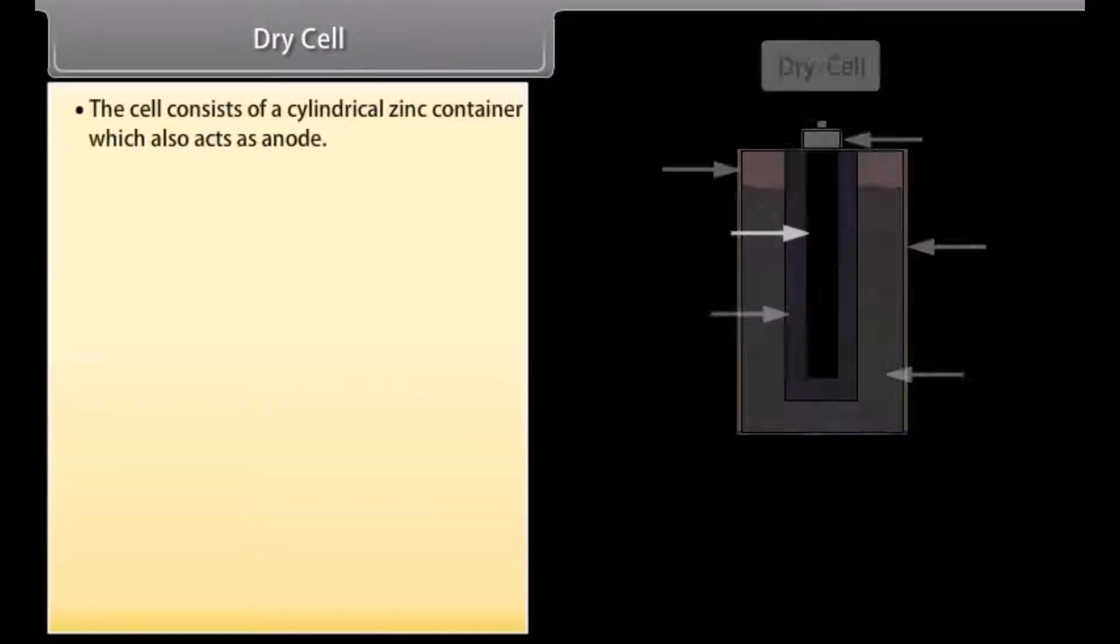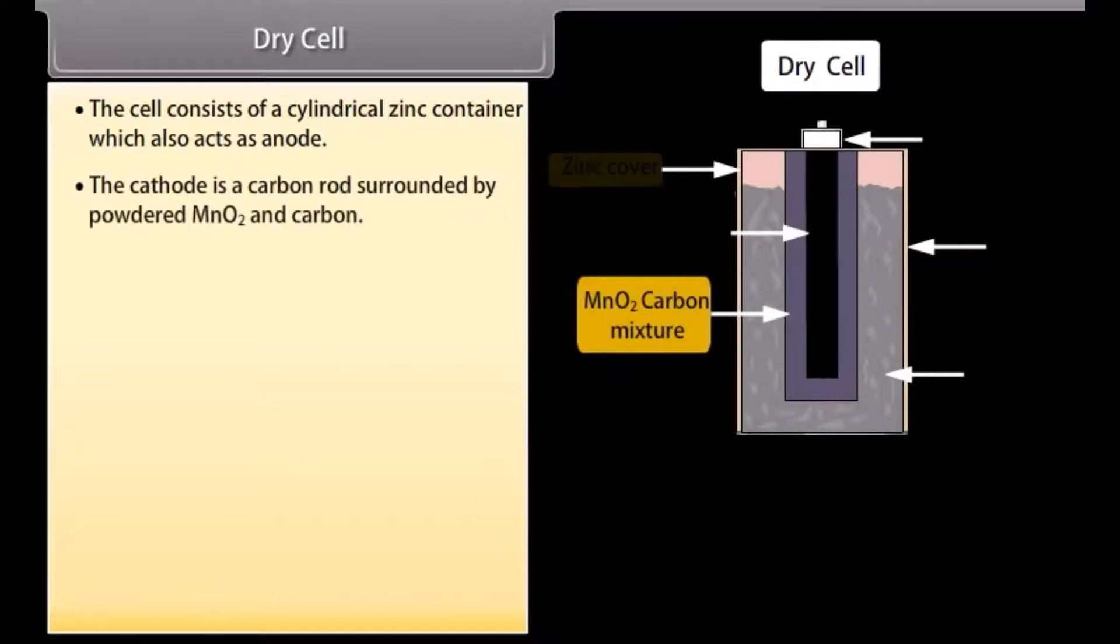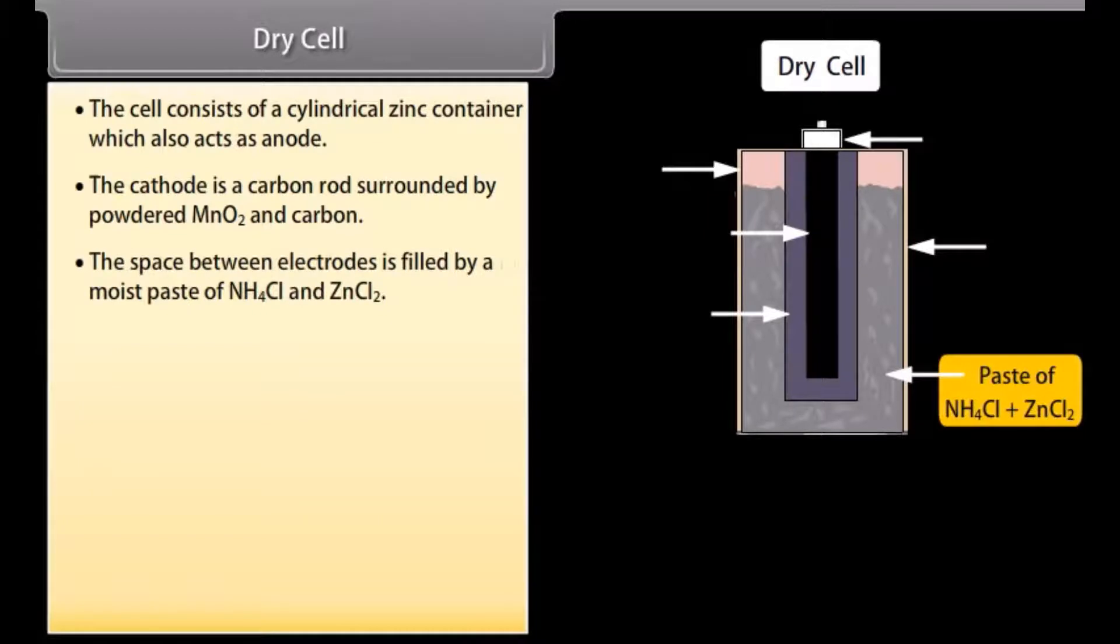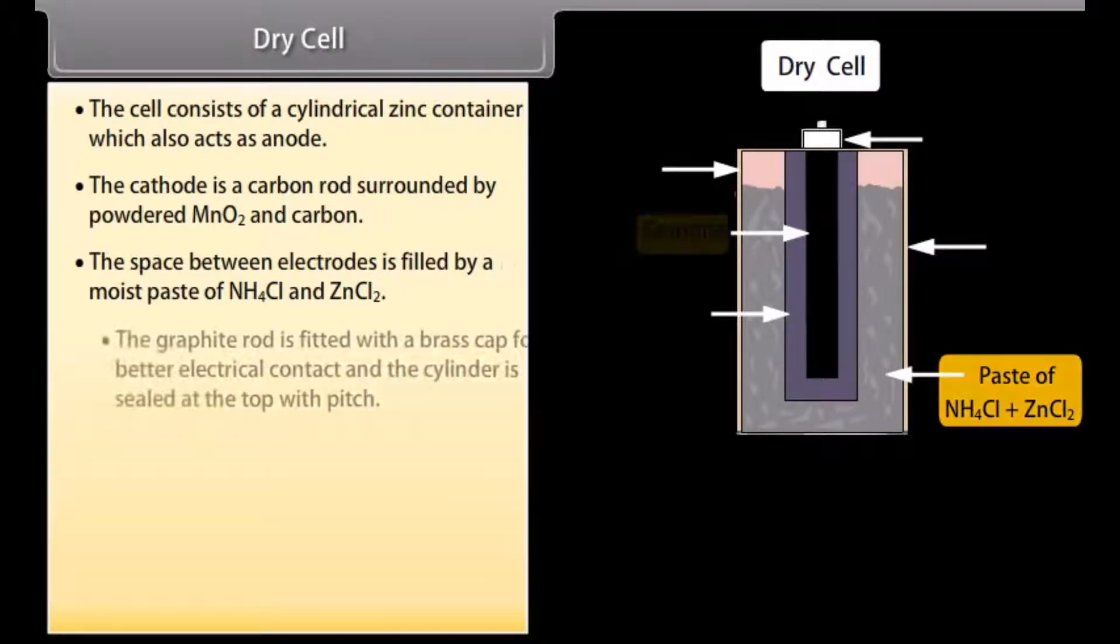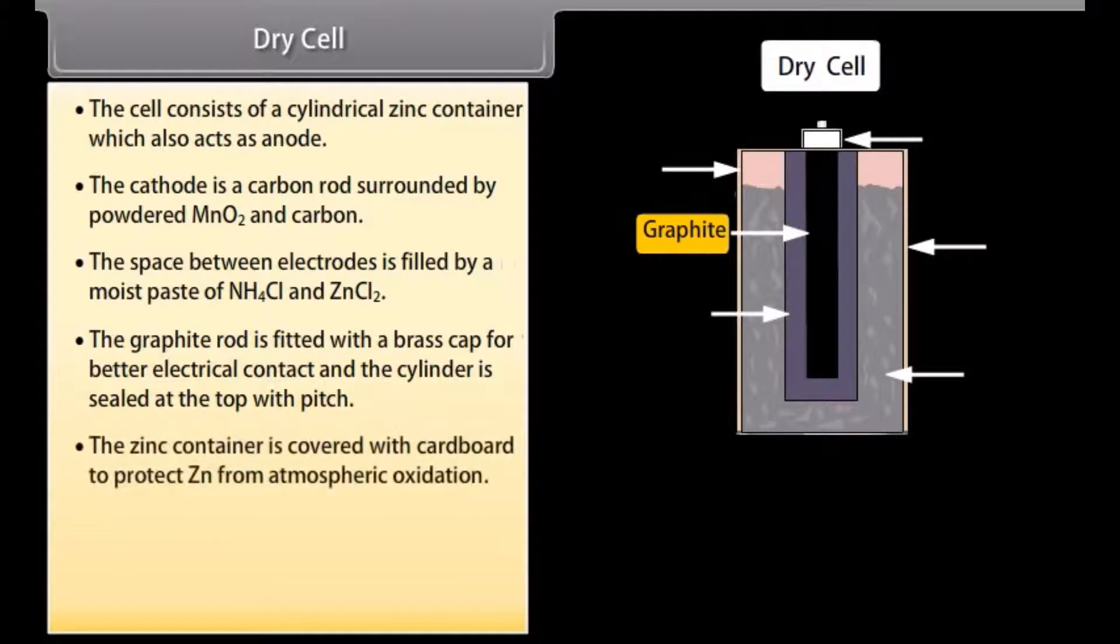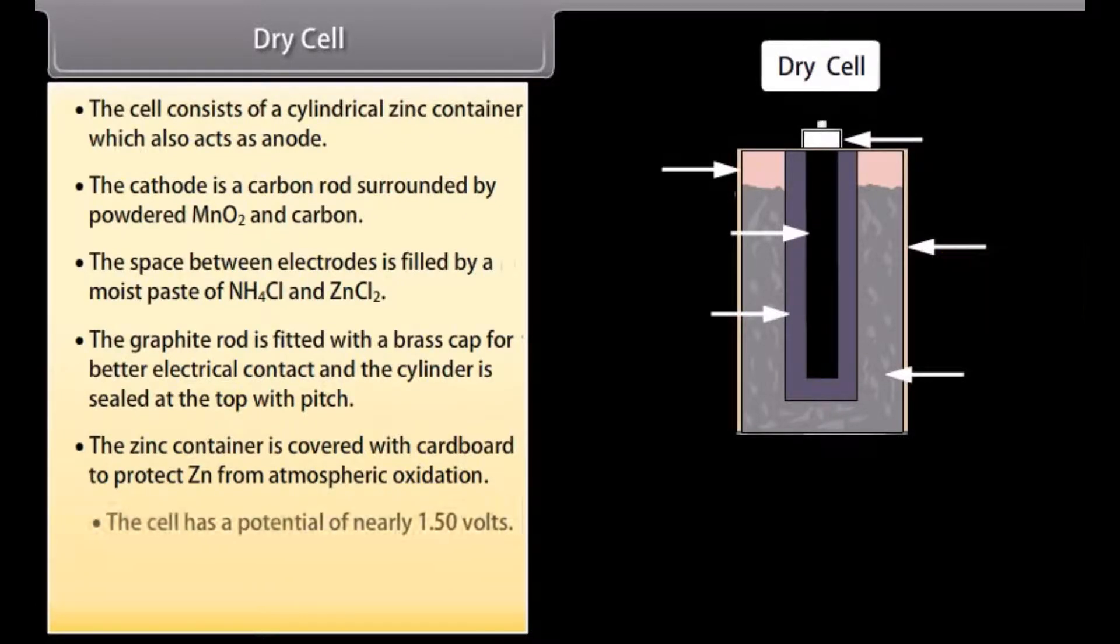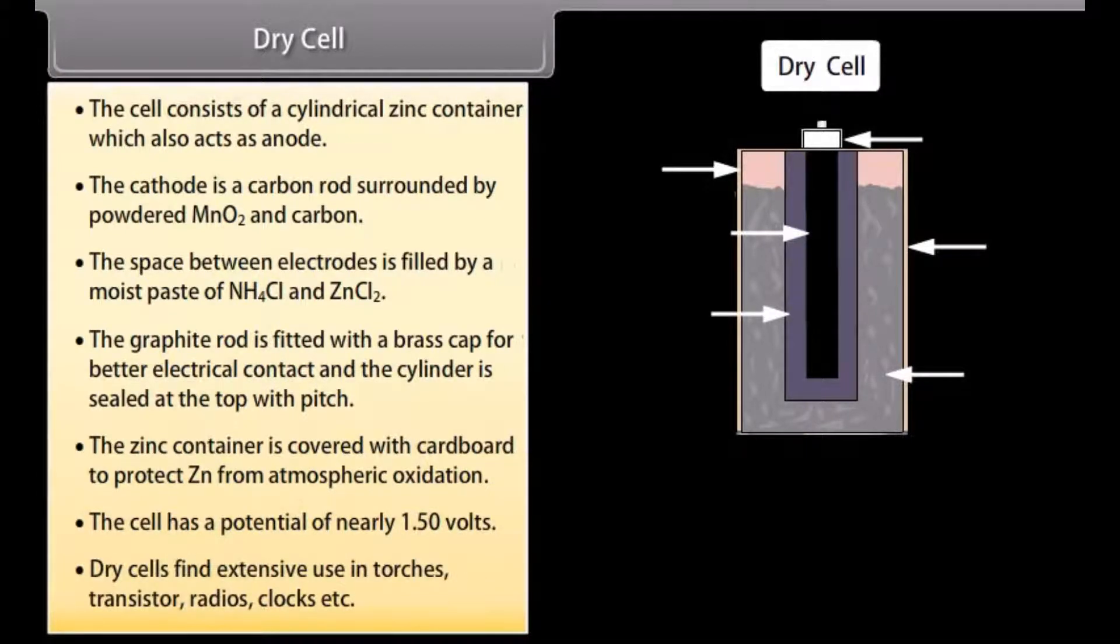Dry cell. The cell consists of a cylindrical zinc container which also acts as anode. The cathode is a carbon rod surrounded by powdered MnO2 and carbon. The space between electrodes is filled by a moist paste of NH4Cl and ZnCl2. The graphite rod is fitted with a brass cap for better electrical contact and the cylinder is sealed at the top with pitch. The zinc container is covered with cardboard to protect Zn from atmospheric oxidation. The cell has a potential of nearly 1.50 volts. Dry cells find extensive use in torches, transistors, radios, clocks, etc.